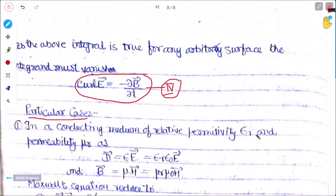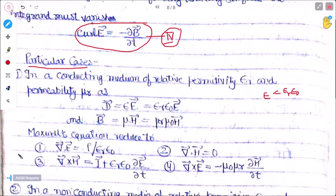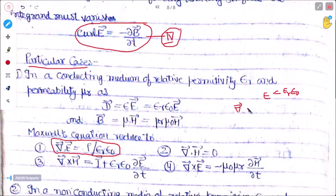For a conducting medium with relative permittivity εr and permeability μr, the relations are: D = ε E = εr·ε₀·E, and B = μ H = μr·μ₀·H. Maxwell's first field equation becomes: divergence of (εr·ε₀·E) = ρ, and since εr and ε₀ are constants, divergence of E = ρ/(εr·ε₀).